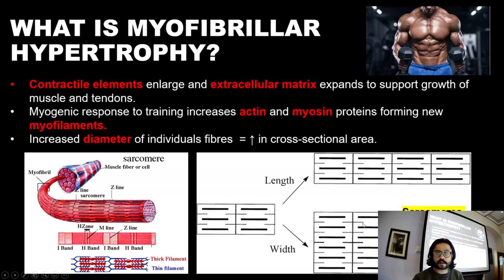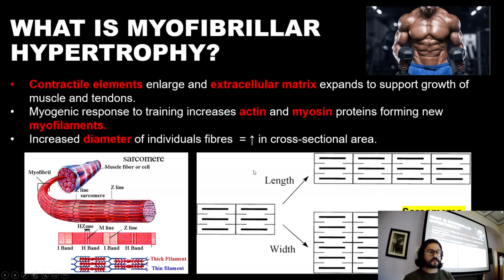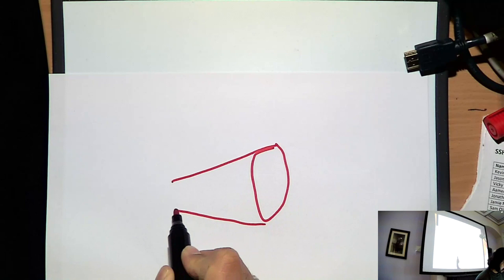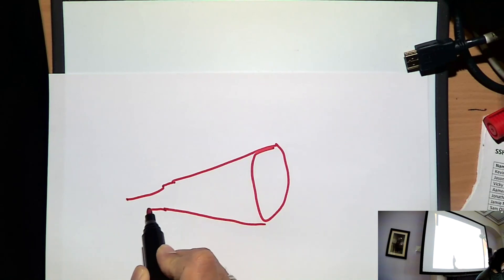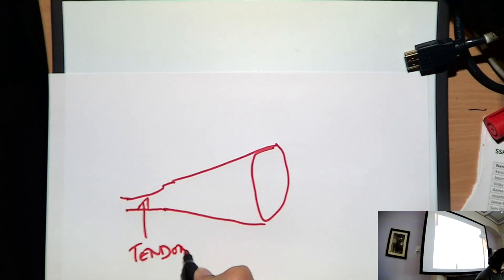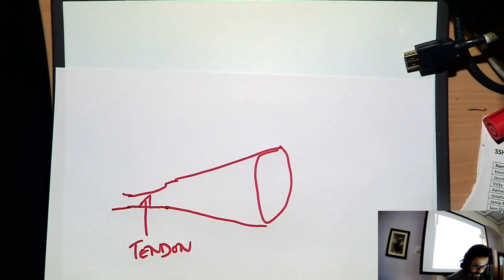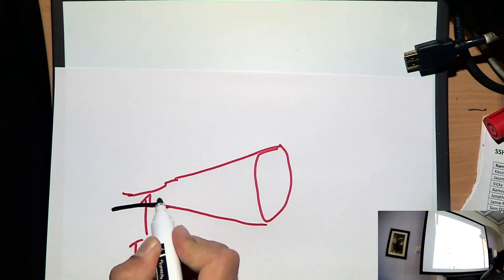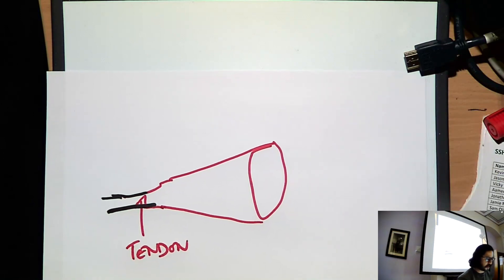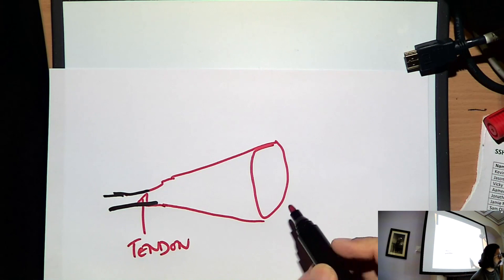When we look at this diagram, the sarcomeres are added in parallel to each other, and the diameter of the individual fibres increases as well, so you get an increase in cross-sectional area. Now I want to go to the dot cam. So here's a muscle — this is your tendon, attaching your muscle to your bone. And this is a cross-sectional area of the muscle, so we've just sliced through it.